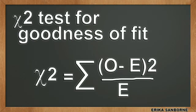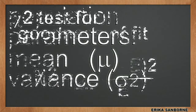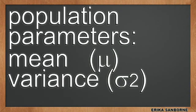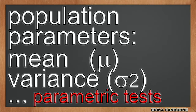This video is about the chi-square test for goodness of fit. All the other statistical tests in an undergraduate statistics course are about population parameters. Parameters describe populations and consist of population mean, or mu, and population variance, or sigma. We call them parametric tests because they're about parameters.